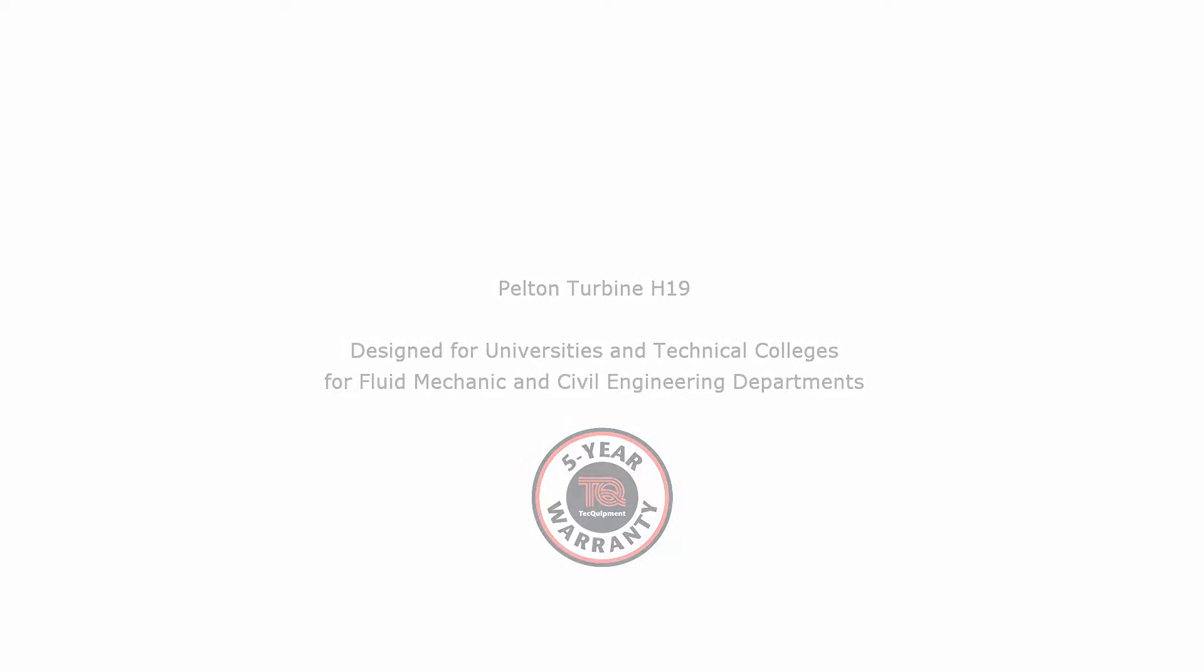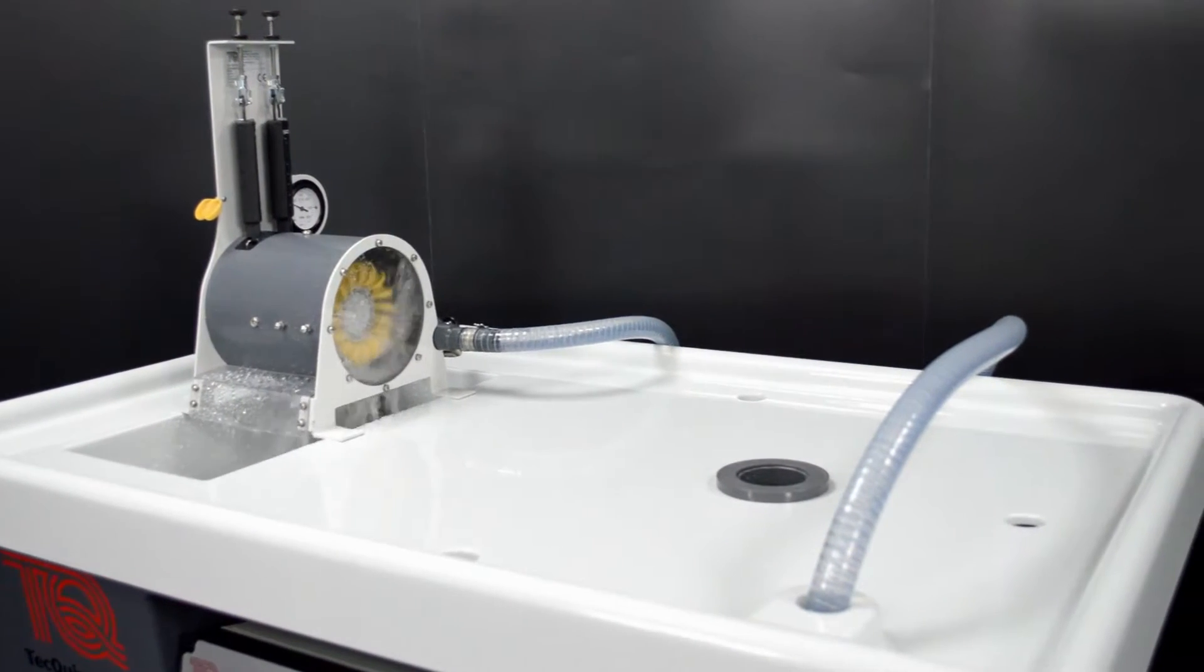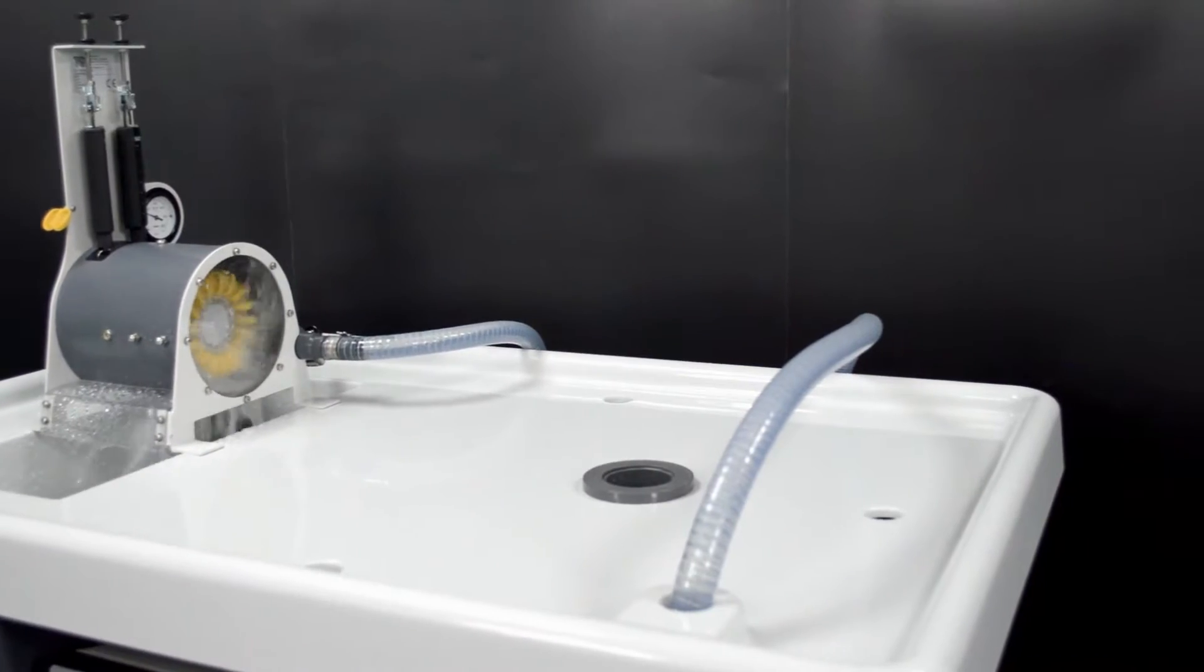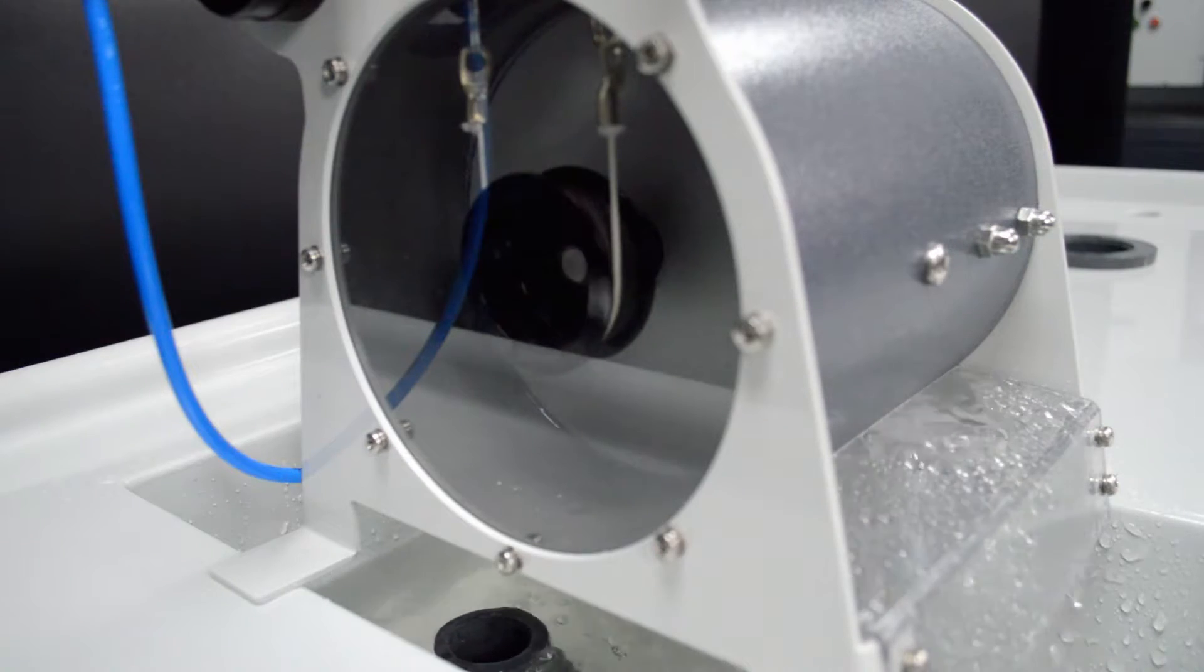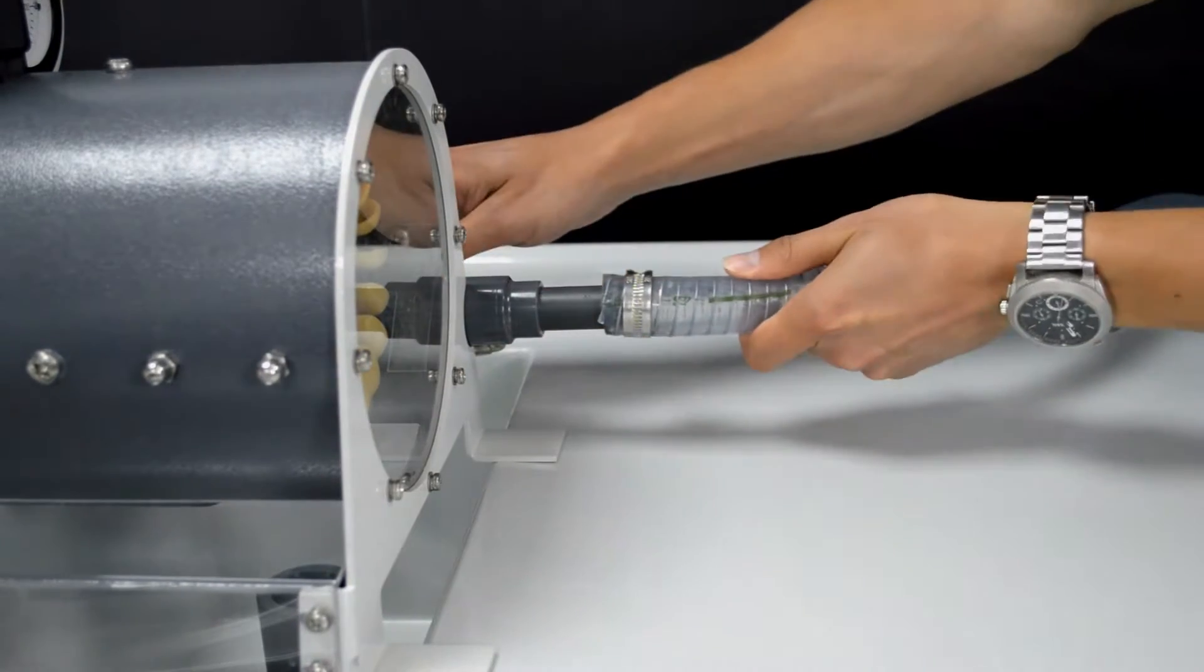Tech Equipment's Pelton Turbine is a laboratory scale vertically mounted turbine with a handbrake dynamometer that measures torque. It allows students to do tests on performance so they can understand how a Pelton turbine works.